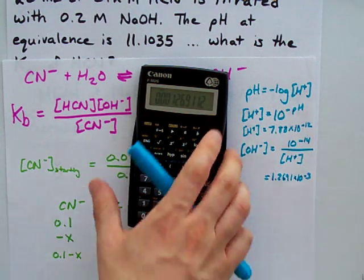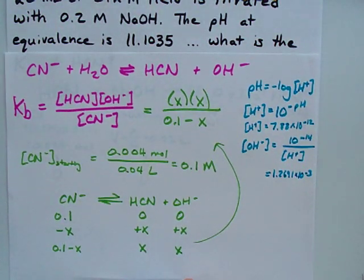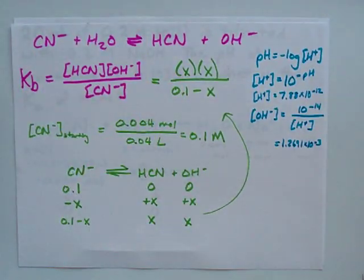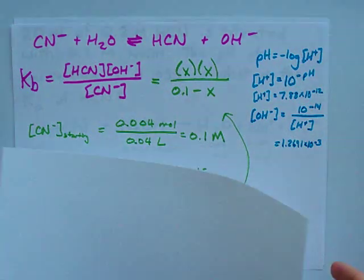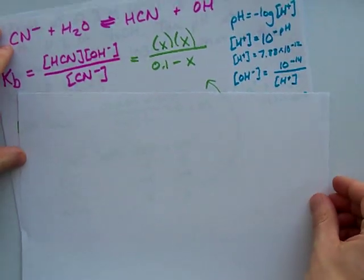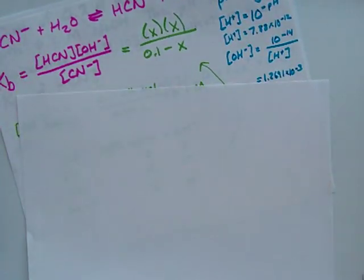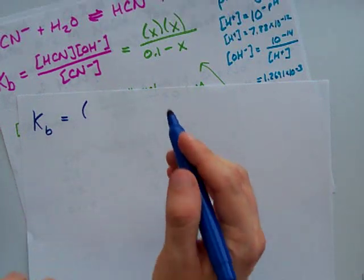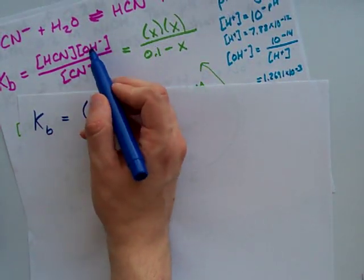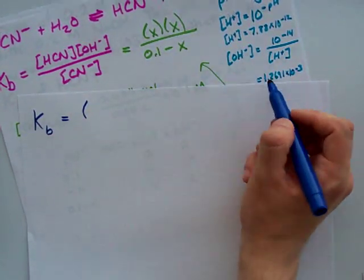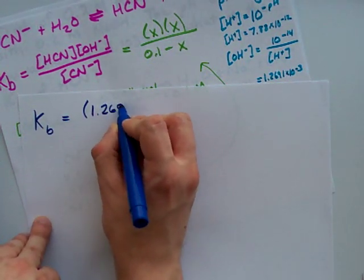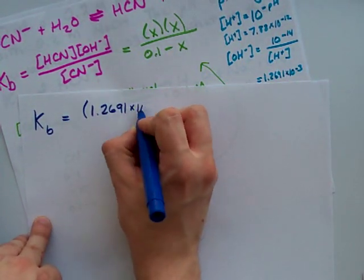Alright, here we go. I think it's time. Can you guys see what I'm doing here? Yes, you can. So, what that means is my KB is X. Now, X is my OH minus concentration which is why I found my OH minus concentration. 1.2691 times 10 to the negative 3 times X again...